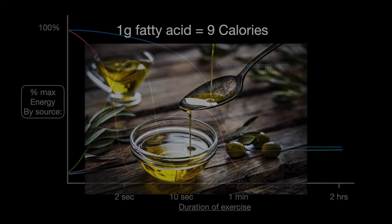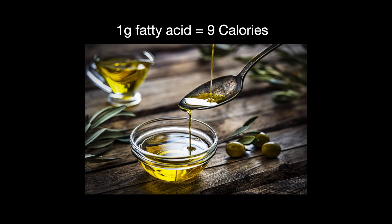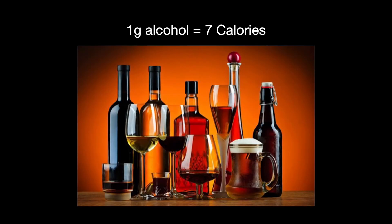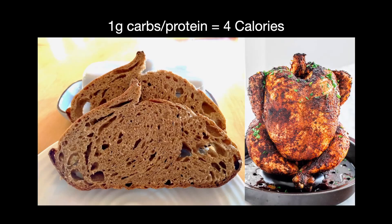Different macronutrients don't have the same energy density. The most dense is 1 gram of fatty acids, yielding 9 calories. 1 gram of alcohol has 7 calories, and 1 gram of carbs and protein have the least amount of energy, yielding just 4 calories.